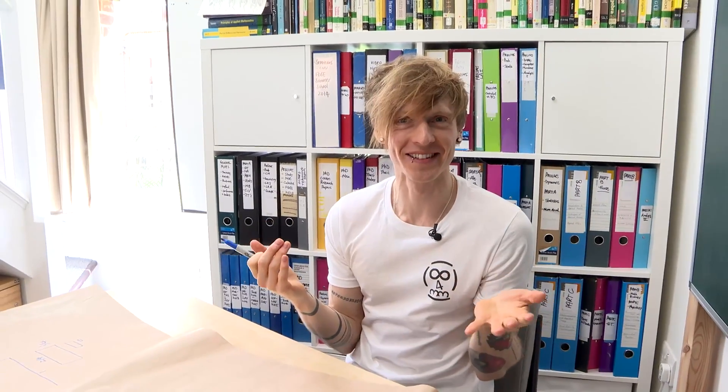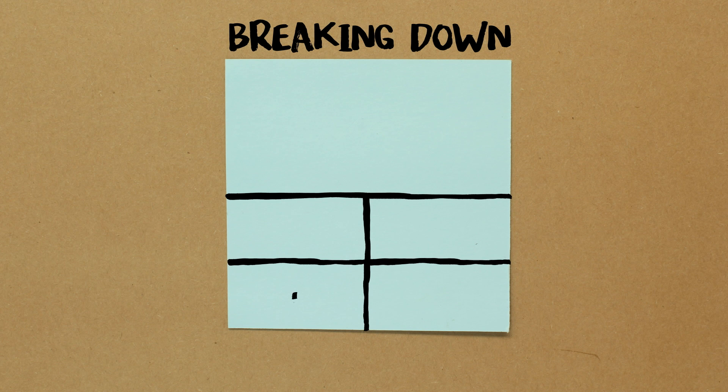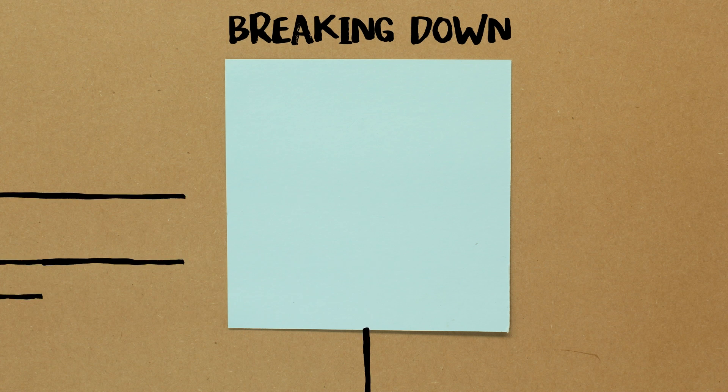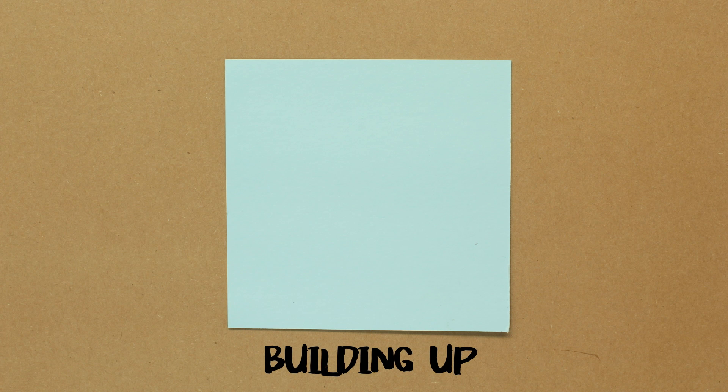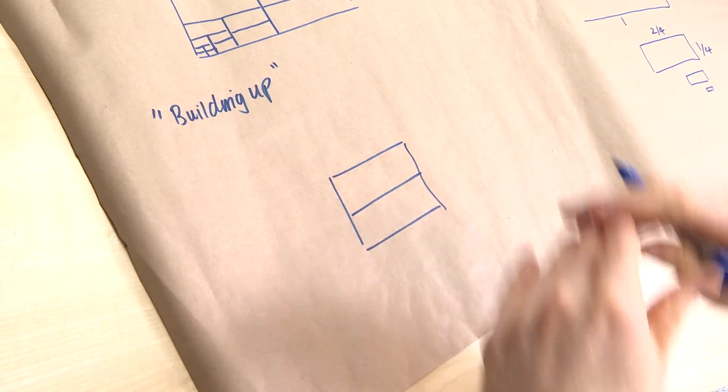We now have an infinite number of ways to fill a square with these two-by-one rectangles by just keep adding three. But we're missing quite a few — there's almost twice as many gaps as numbers we're hitting. So we want to think about how we could hit those numbers. I call the first approach the 'breaking down' method, because we took a solution and broke down a rectangle to add three to the total.